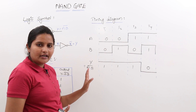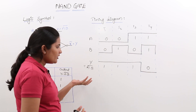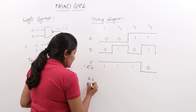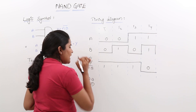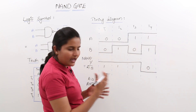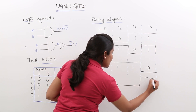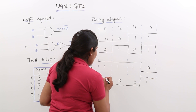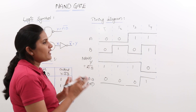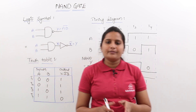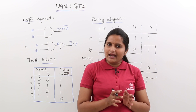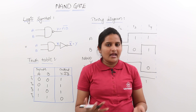Comparing NAND with AND: for AND gate, you get a high output only when all inputs are 1 — that means 1 into 1 gives high output. But for NAND gate, you get the complement of that. NAND gate is the complement of AND gate. Also, NAND gate is called a universal gate because by using only NAND gates, we can implement any other gate.